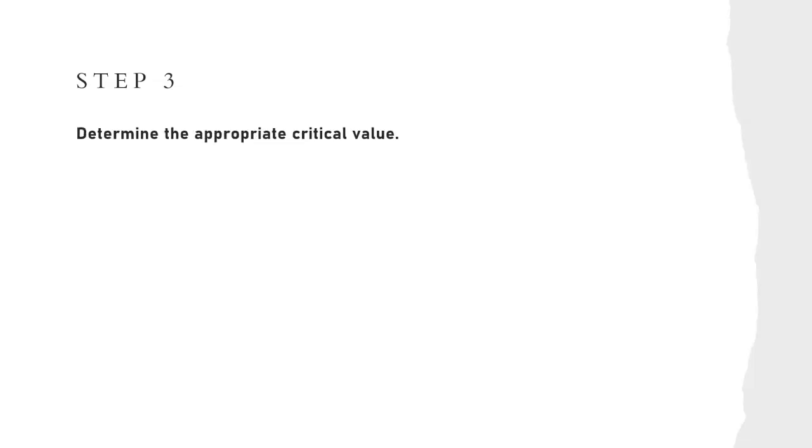Your third step is to determine the appropriate critical value. Now the critical value, you care about your alpha and your tail. So if it's a one-tailed test, we will use in Excel equals norm.s.inv of alpha, and if it's a right-tailed test, your critical value will be positive. If it's a left-tailed test, your critical value will be negative.